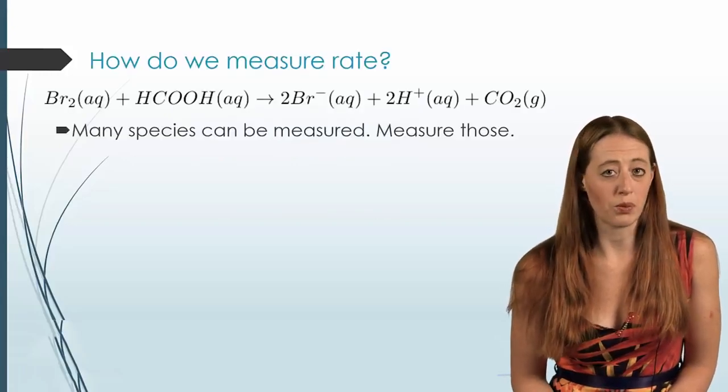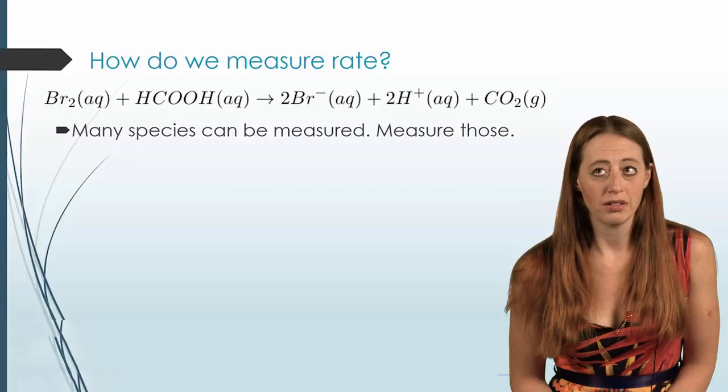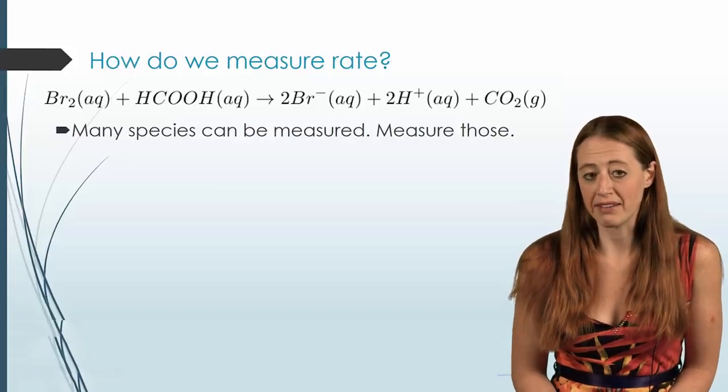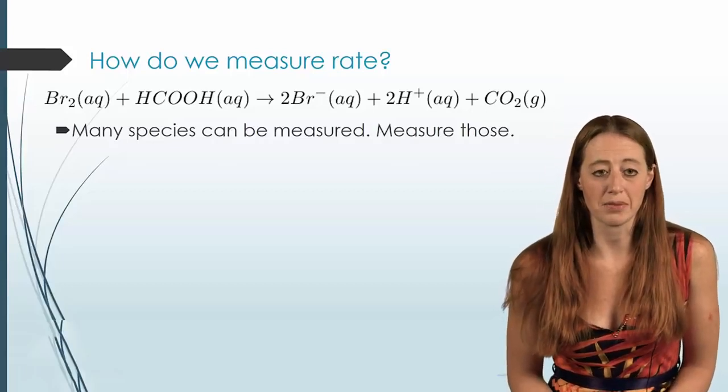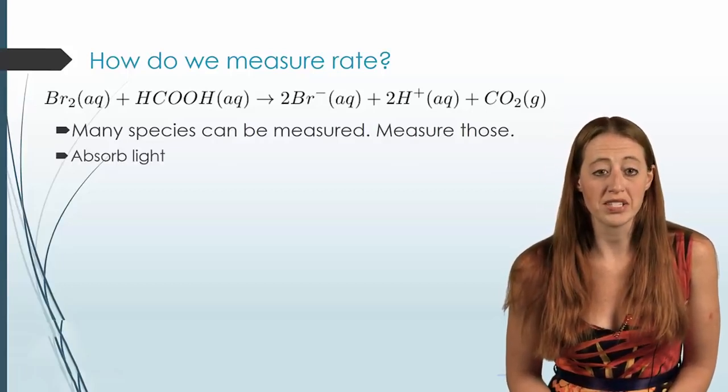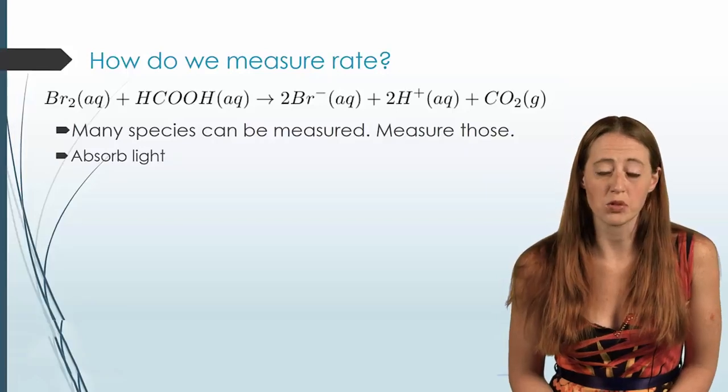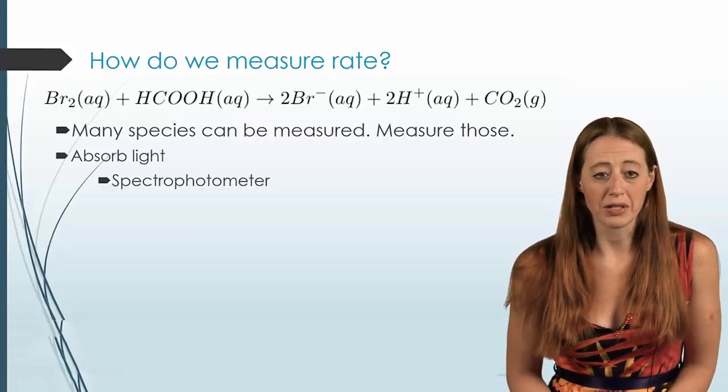So there's many different ways that we can measure how much of a given substance we have. And we need to use that to find the rate law for the various substances. So pick the ones that you can measure. For instance, some absorb light and we can use a spectrophotometer.